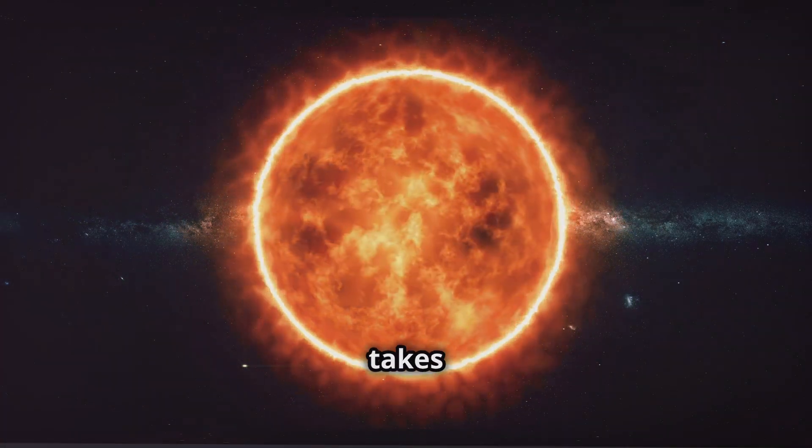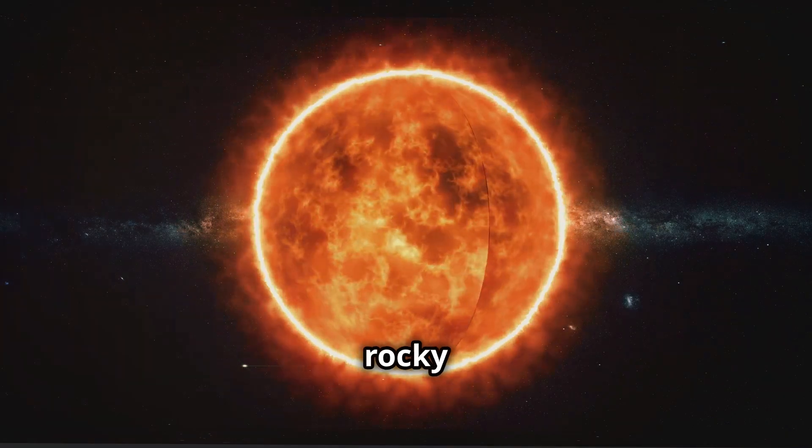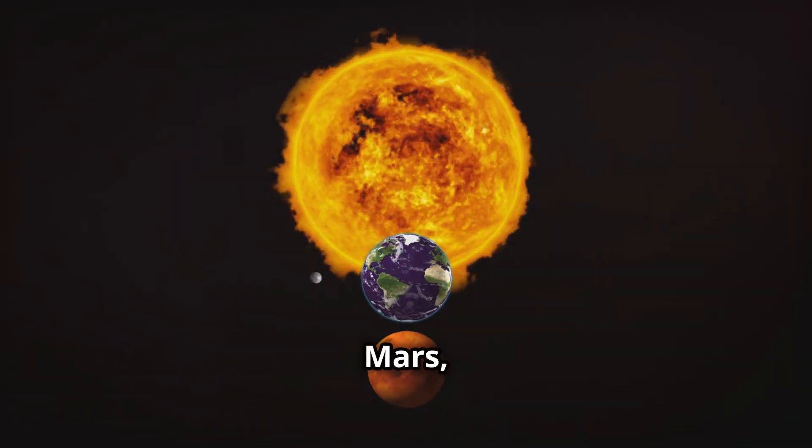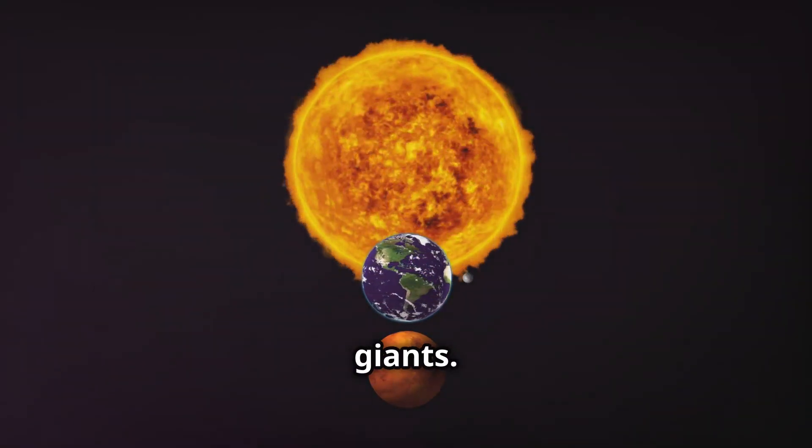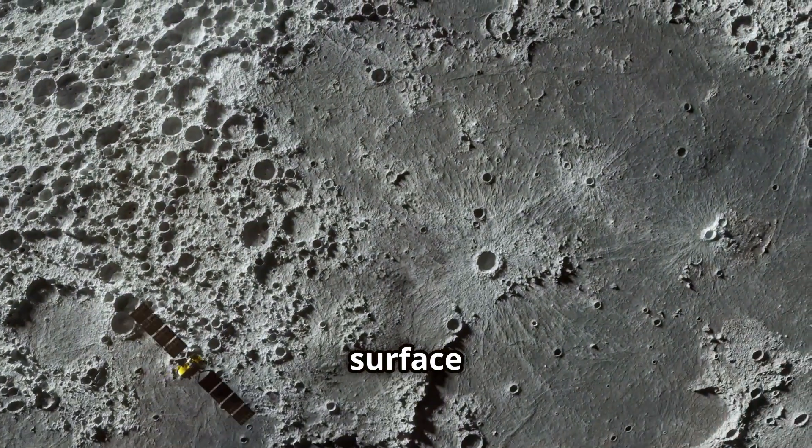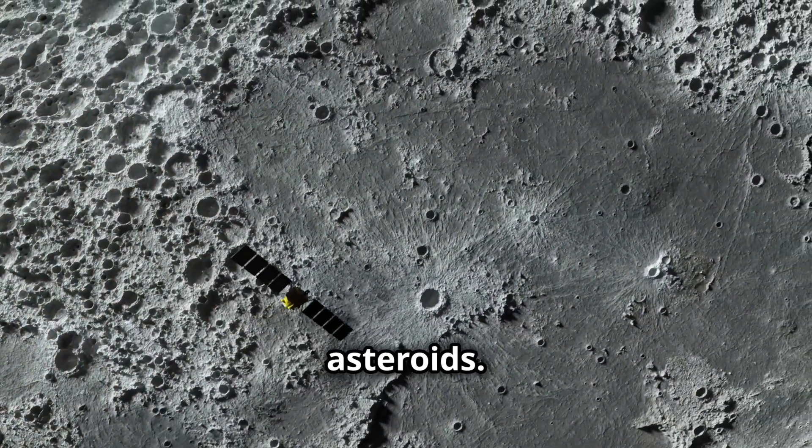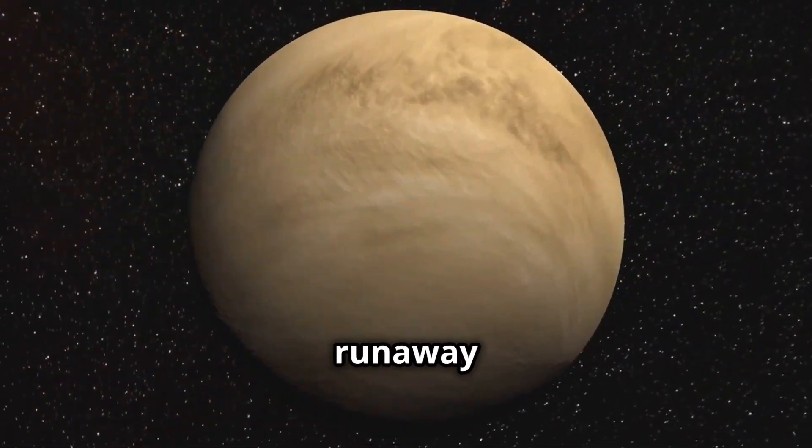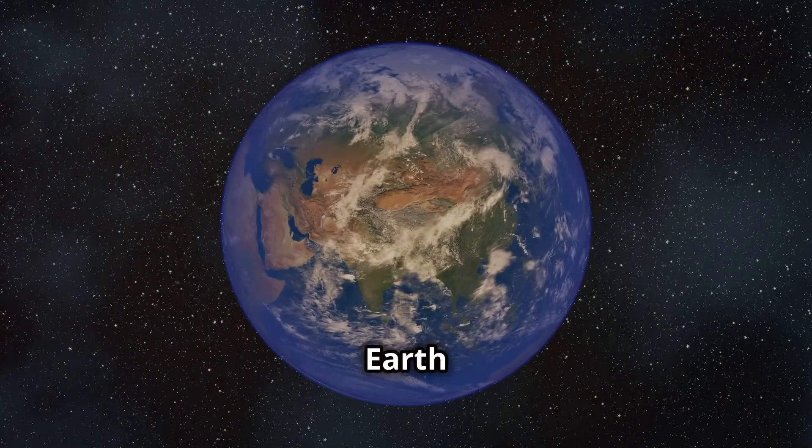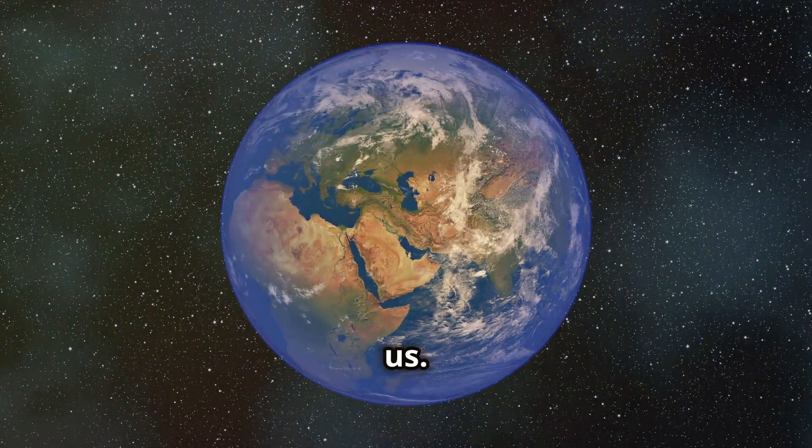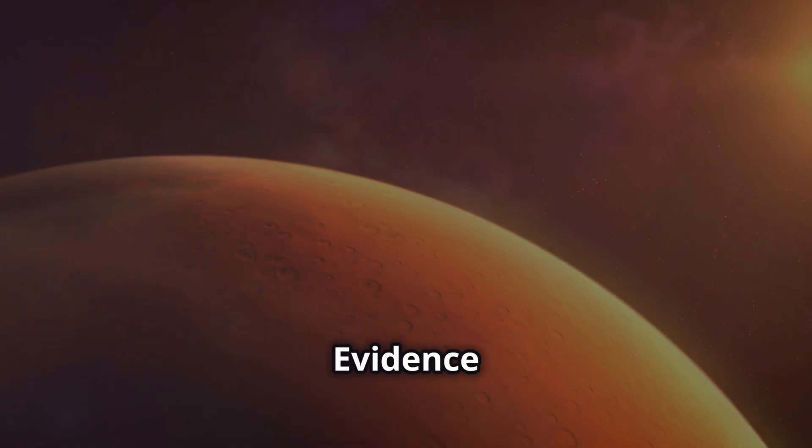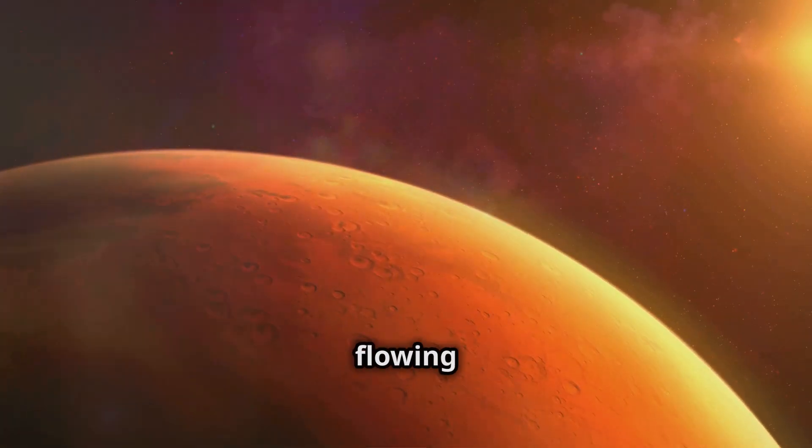Our journey through the solar system now takes us to the inner planets, rocky worlds that bask in the sun's heat. These planets, Mercury, Venus, Earth, and Mars, are vastly different from the gas giants. Mercury, the smallest planet, is a world of extremes. Its surface is heavily cratered by asteroids. Venus is a cautionary tale of a runaway greenhouse effect. Its thick atmosphere traps heat, making it the hottest planet. Earth is an oasis teeming with life, its atmosphere sustaining us. And then there's Mars, the red planet with a thin atmosphere. Evidence suggests it once had a thicker atmosphere and flowing water.